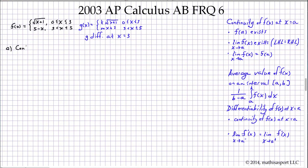So continuity requires three things. First it requires that the function exists at the point. It requires f of 3 to exist. And f of 3 here is... we evaluate the piecewise function over the portion of the domain where 3 is included. So that's root 3 plus 1, and that is 2. So that's the first requirement.